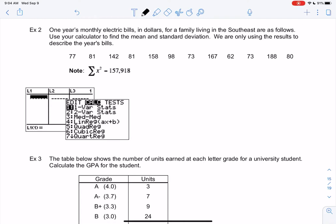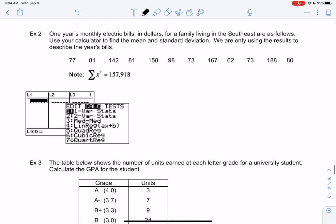All right, hey everyone, we're still in Section 3-4. We're finding the mean and standard deviation on the calculator, so we'll use our calculator to find mean and standard deviation. We have one year's monthly electric bills in dollars for a family in the Southeast shown below. We want to find the mean and standard deviation, and we're only describing this year, so that means this would be a population. So we'll write that down before we use the calculator.